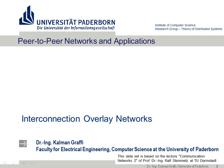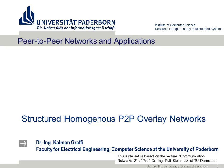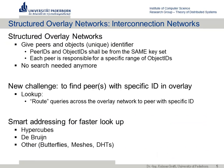Welcome to today's lecture. In the last lecture we had a look at structured homogeneous peer-to-peer overlays. As a short reminder: we had peers, peer identifiers and object identifiers, and the object identifiers are matched to peers with responsibility areas. The question is how do we do the routing — how do we find peers responsible for specific object IDs? Last time we looked at Chord; this time we will also look at hypercubes, de Bruijn graphs, and other types of overlays.